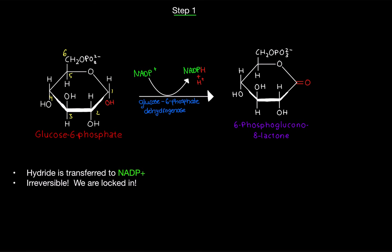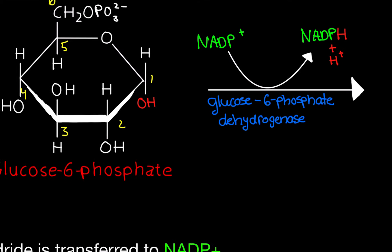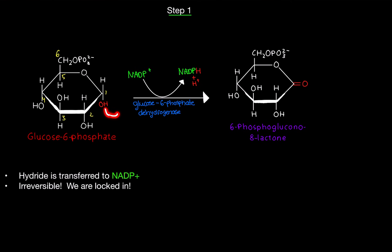Step one: we're taking glucose-6-phosphate, which we know from glycolysis. We're going to use the enzyme glucose-6-phosphate dehydrogenase and take NADP+. The OH group gets its hydrogen stripped off and attached to NADP+, giving us NADPH + H. The resulting molecule has a double-bonded oxygen, giving us 6-phosphogluconolactone. This is a hydride shift and it is irreversible — once we get here, we cannot go back.